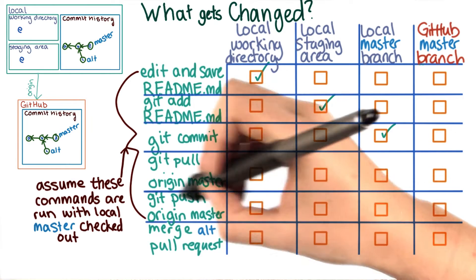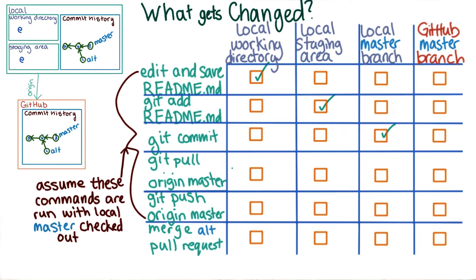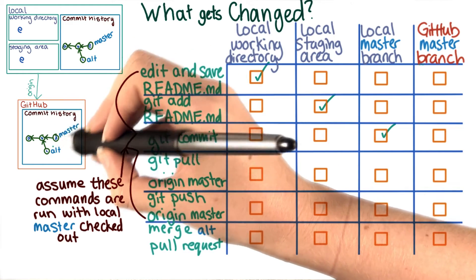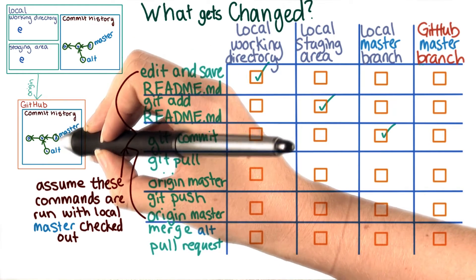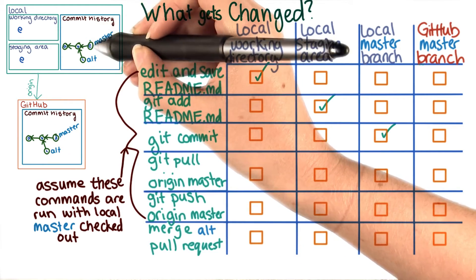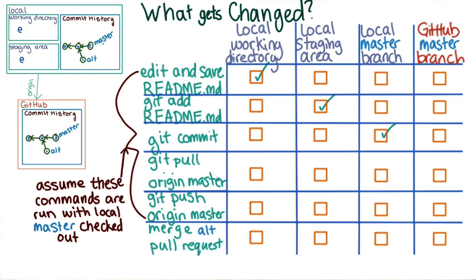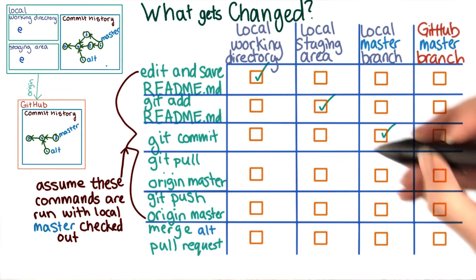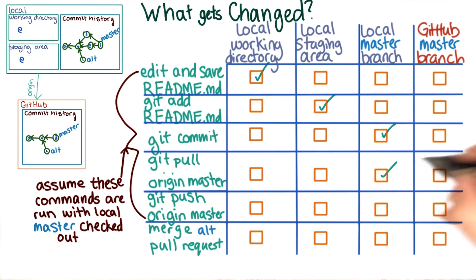So what about git pull origin master? This will take the commit currently in the master branch on GitHub and pull it into the local branch and merge it into what's currently on master. So the local master is the only thing that changes.